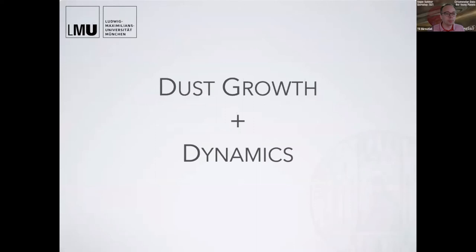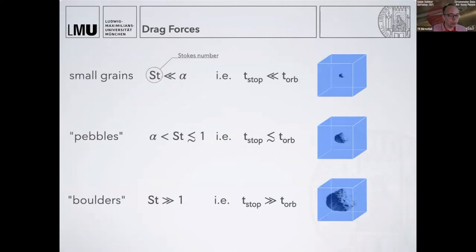Let's dive right into dust growth and dynamics. All of this really needs drag forces—all of this coupling between dust and gas is built upon drag forces. We will have to distinguish between the particle sizes. This is really where differences in particle sizes come in. We have small grains. Theorists like to talk about the Stokes number, but if I say Stokes number you can think of particle size.